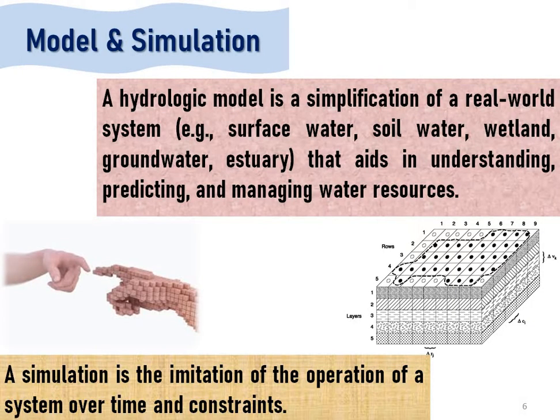Another basic concept is model and simulation. A hydrological model means any watershed or basin system which is replicated by equations or virtual models. A model is a replica of the real system, which consists of water, soil, and other hydraulic structures — whichever components are in the real watershed are represented by the model. A simulation is a replica of the real system's processes, simulating what processes occur on the real earth and converting them into a virtual or analytical process.